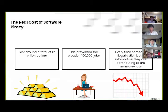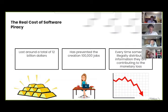The software industry lost a total of $12 billion last year due to software piracy. Software piracy has also prevented the creation of a potential 100,000 jobs. Every time someone illegally distributes information, they are contributing to monetary loss.